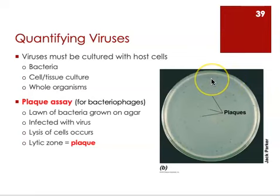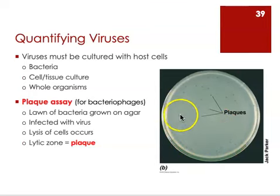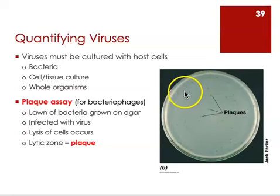There's a cloudy bacterial lawn over the surface of the plate, but there are little clear circles across different areas on the plate. These are called plaques. A plaque is an area on the plate where there are no bacterial cells. What has happened in that spot is the cells that were there were infected with virus, the virus was replicated by the host cell, and then the virus exited and killed the host cell. Where cells were killed, there's no growth — there's a clear spot. Every plaque represents a lytic zone, an area where lysis occurred and cells were killed.